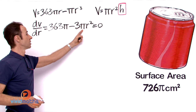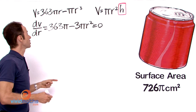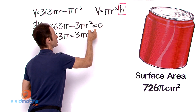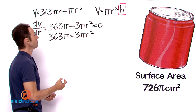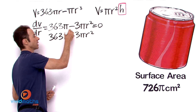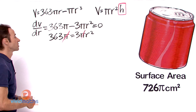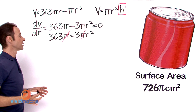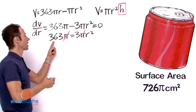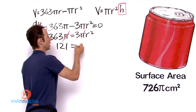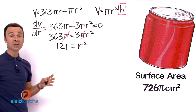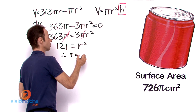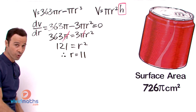Setting 363π − 3πr² = 0, we move 3πr² to the other side: 363π = 3πr². Cancelling π from both sides gives 363 = 3r². Dividing both sides by 3: r² = 121. Taking the square root of both sides: r = 11. We have found the radius for a maximum or minimum.